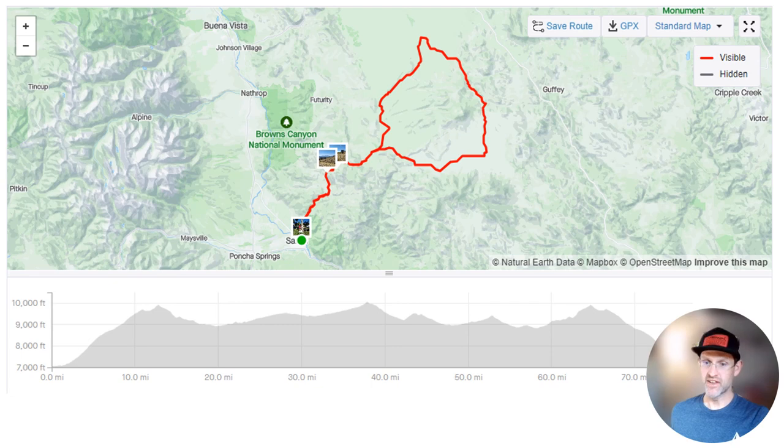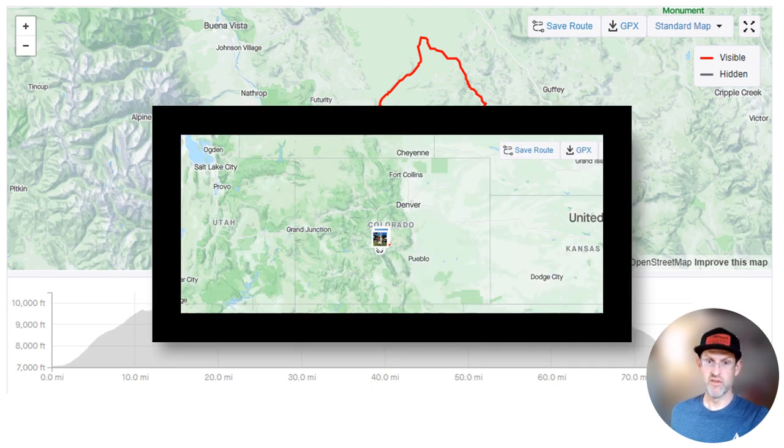In case you don't know where Salida is, hopefully you know where Colorado is. Here's a zoomed out map. It's about 150 miles southwest of the city of Denver. The race course is mostly in South Park, which is a high mountain valley, and yes that's the same South Park in the cartoon.